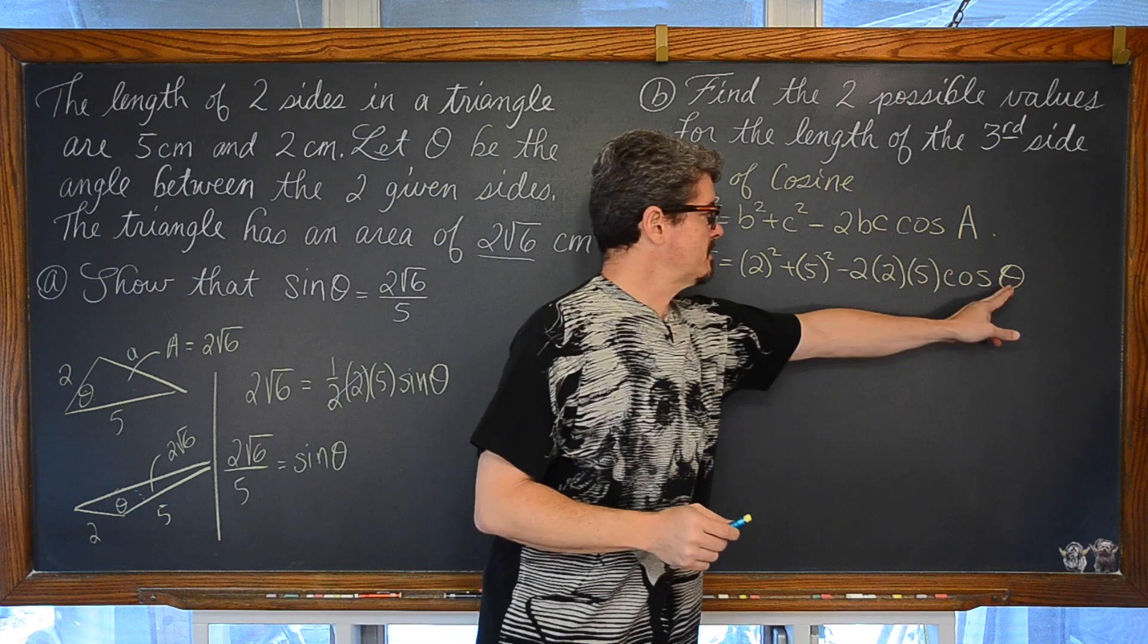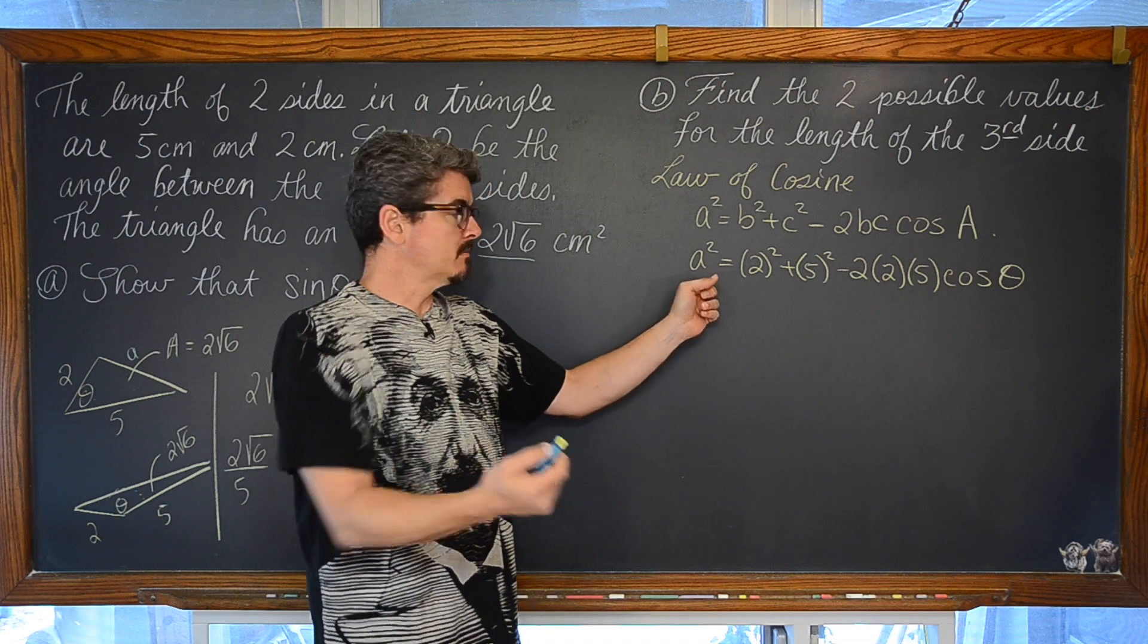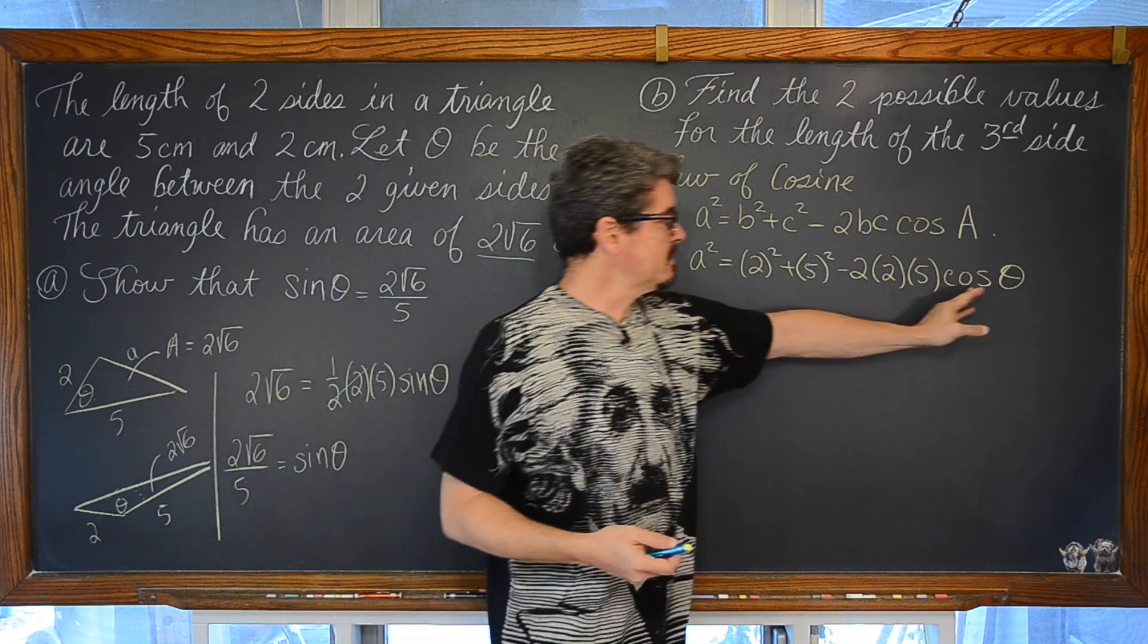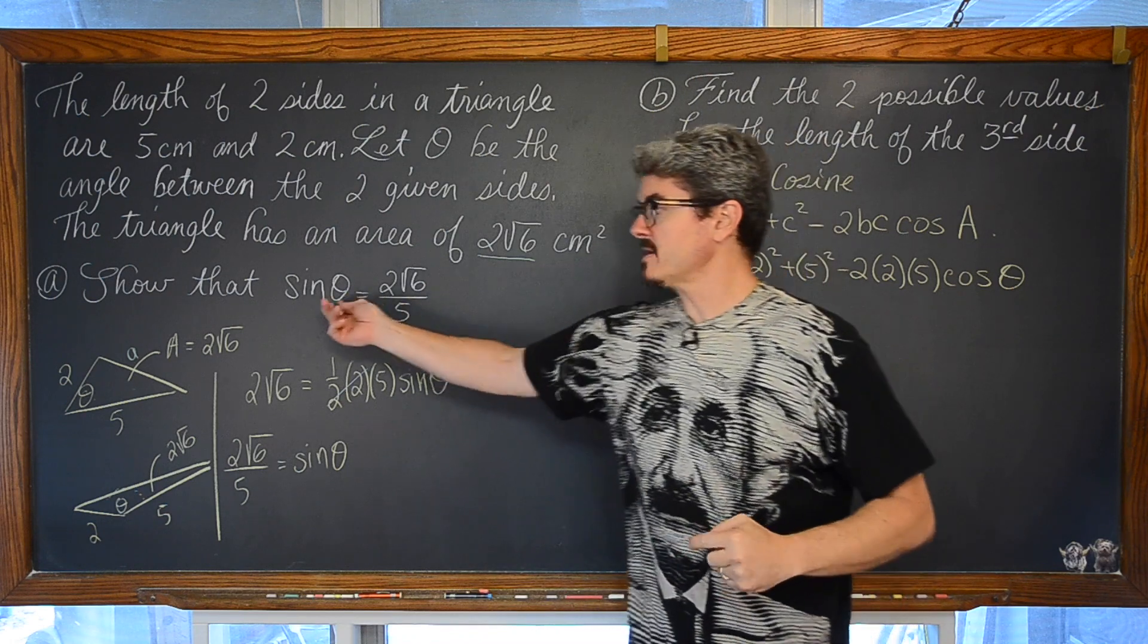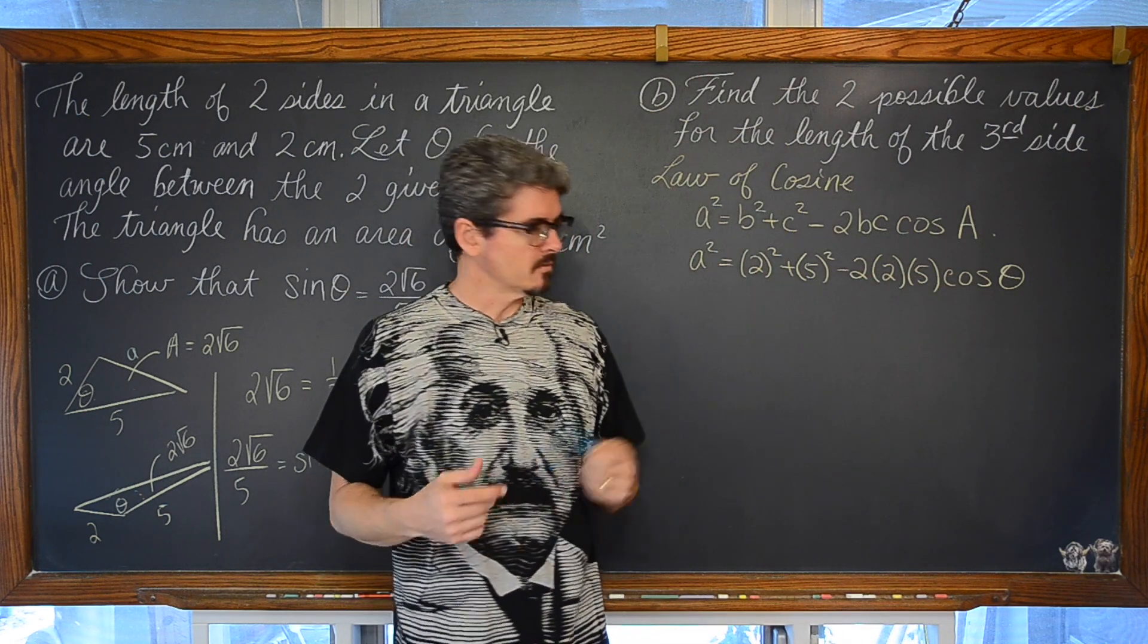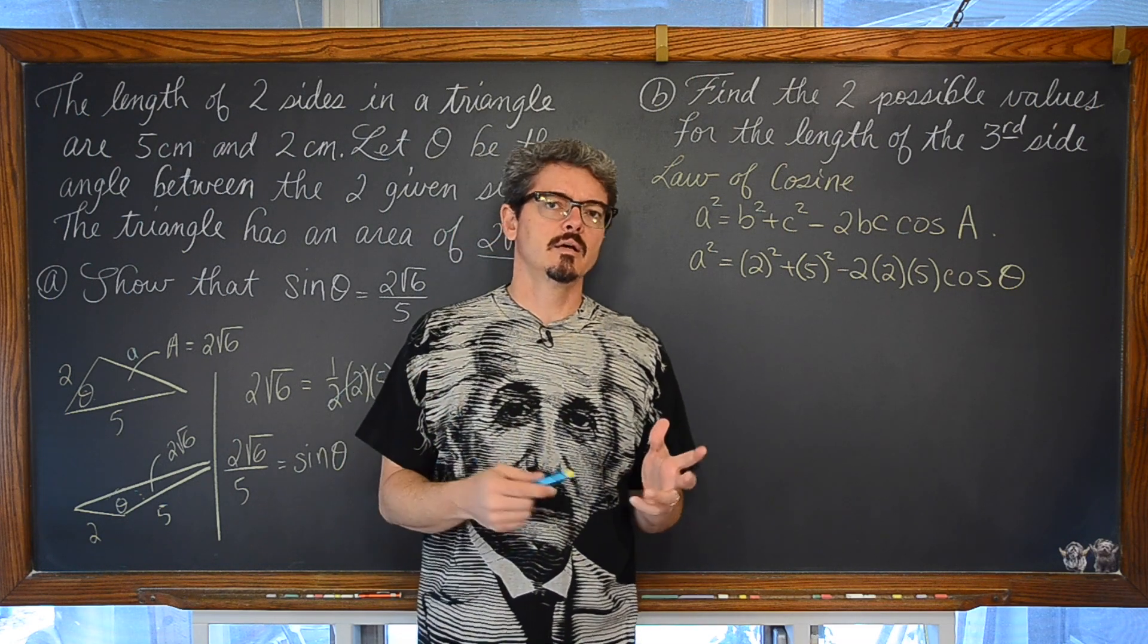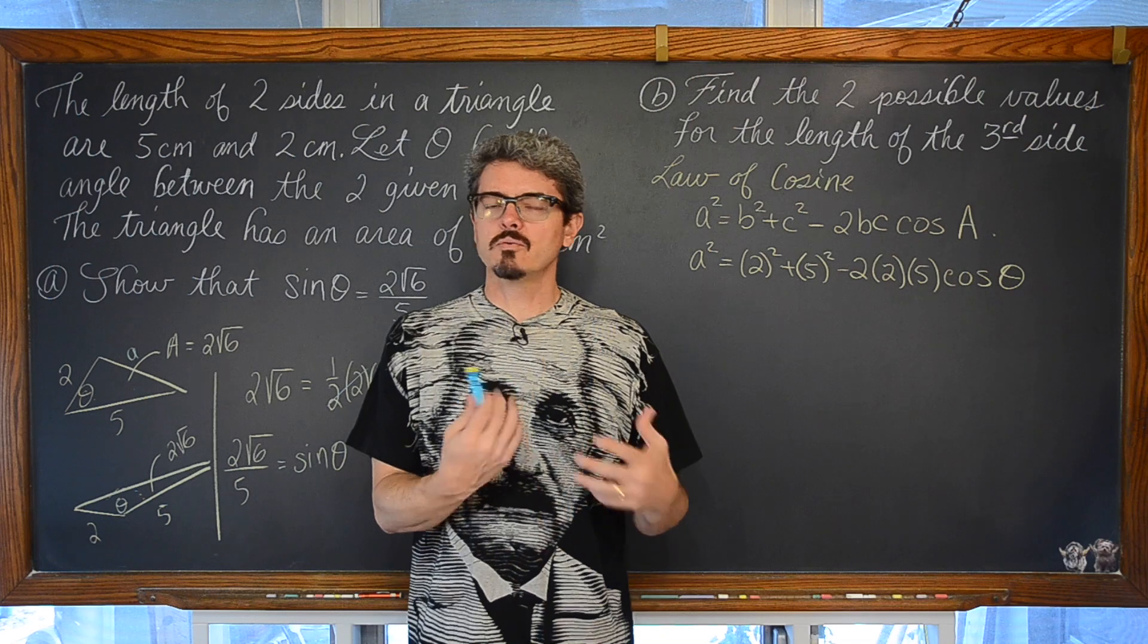Okay. So, we have almost everything we need to find some information about that third unknown side. But we need to know what the cosine of theta is equal to. We know what the sine of theta is. How are we going to use that to find the possible ratios for the cosine of theta? What identity allows you to link those two together?